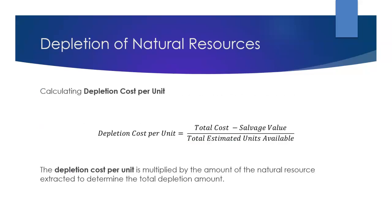The first thing we need to do when figuring out the depletion of our natural resources is to find our depletion cost per unit. We see that equation on the screen. It's your total cost minus your salvage value, all divided by your total estimated units available. Once you have that, you multiply the depletion cost per unit by the amount of the natural resource extracted to find the total depletion amount.